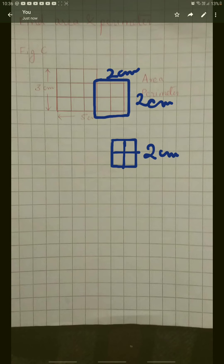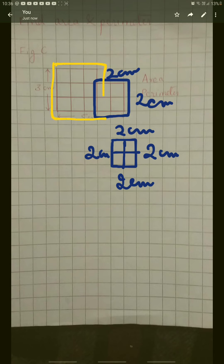All its sides are of 2 centimeters. I am going to take another square in the same figure — this one — and this is a 3 by 3 square, meaning all the sides are of 3 centimeters.